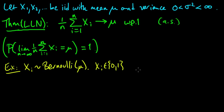That's a very intuitive result, but it's nice to know that this does in fact hold, and with a quite strong condition. There are other forms of the law of large numbers. This is called the strong law of large numbers. There's also the weak law of large numbers, which converges in probability, and there's another form which converges in a different way.